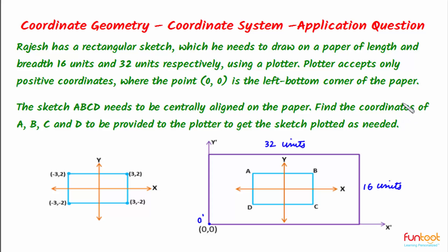We have to find the coordinates of A, B, C and D to be provided to the plotter to get the sketch plotted as needed. This sketch will be drawn on the paper using a plotter, and we need to find the coordinates to be given to the plotter so that this sketch can be drawn — and those coordinates should be positive only.